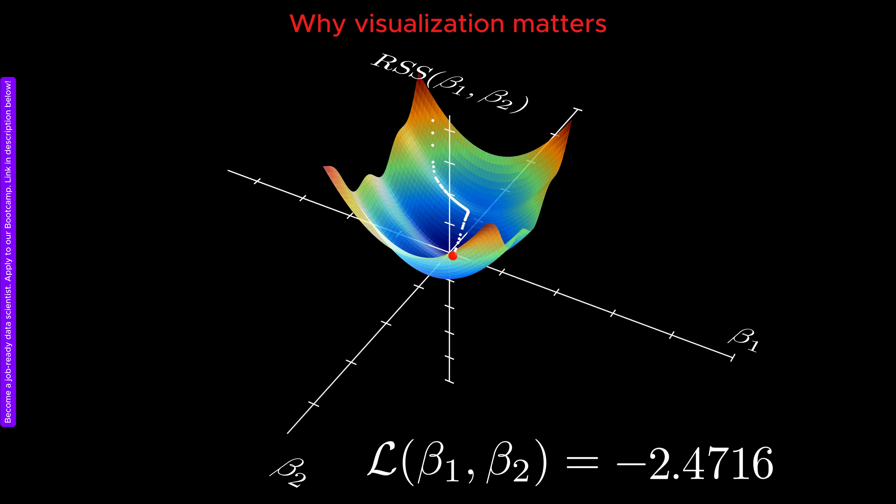The loss function is a function of the free parameters of the model, meaning all the weights and biases that the model can adjust during training. There are several important reasons why we would like to visualize the landscape of the loss function over its free parameters.